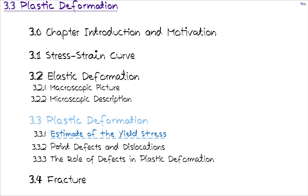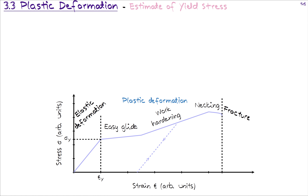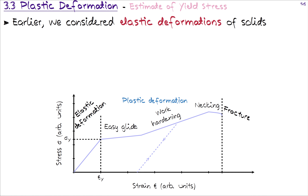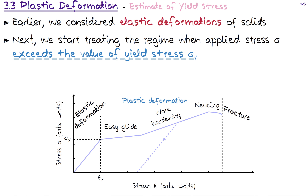We will now go into estimation of the yield stress value. We are now in the plastic deformation regime. Not all materials have this regime, but some do. When we are there, we know that we have gone beyond the elastic deformation regime of solids. We start dealing with the regime when the applied stress sigma exceeds the yield stress sigma_y, and after this the deformations of the solid become plastic — something becomes irreversible.